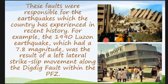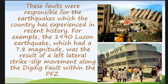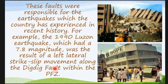These faults were responsible for the earthquakes which the country has experienced. Based on our history, there have been many earthquakes. For example, we have the 1990 Luzon earthquake, which had a 7.8 magnitude and was the result of the left lateral strike-slip movement of the Digdig fault — one of the faults in our archipelago. When it moved, it released a 7.8 magnitude of energy and devastated areas in Luzon.